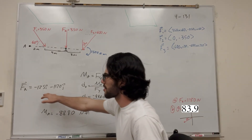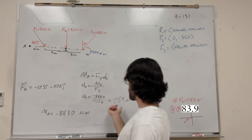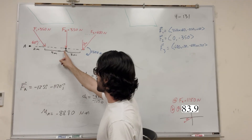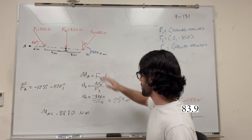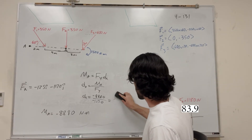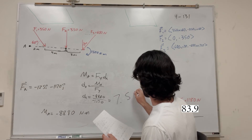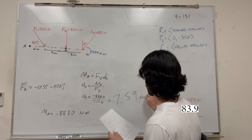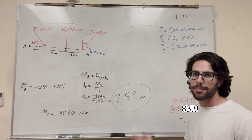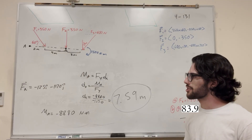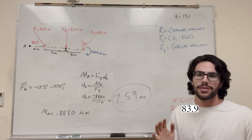So if we take our resultant force vector and place it at 7.59 meters from point A — right around this location — it will produce the exact same effect as the original force system. That's how you solve these kinds of moment problems. Check your formulas, and it's really not too tricky. See you in the next one.